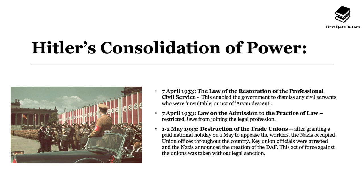On 7th April 1933, the law of the restoration of the professional civil service was passed, and this enabled the government to dismiss any civil servants who were deemed 'unsuitable' or 'not of Aryan descent.' Aryan means people who are blonde-haired and blue-eyed — seen as a superior race in Hitler's eyes — and he wanted to promote this race and demote other races that didn't fit.